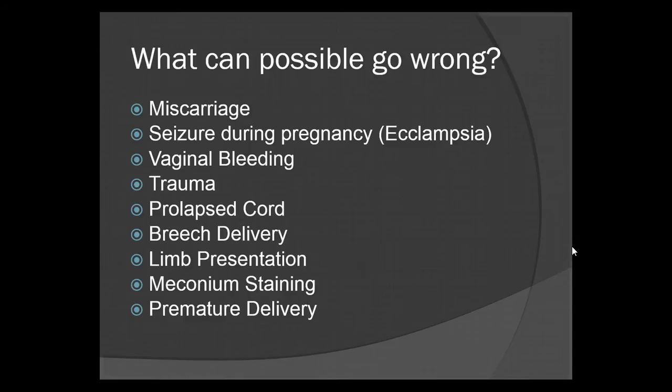Complications can arise throughout the pregnancy and even during delivery. One of the biggest issues that arises with pregnancies are miscarriages — when the body spontaneously aborts the fetus during any point of the pregnancy. Then you have seizures during a pregnancy, known as eclampsia. Vaginal bleeding can occur. Any kind of trauma could jeopardize the pregnancy. Prolapsed cord. Breech delivery, where the baby is turned around. Limb presentation, which can be very detrimental during the delivery period. Meconium staining, as well as premature delivery.